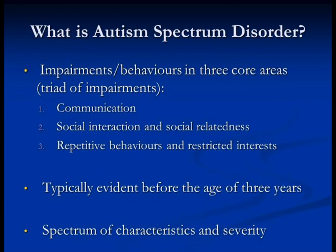So what is autism spectrum disorder? Many of you will know, but for those who are not familiar with the term, autism spectrum disorder is recognised by impairments and difficulties in three specific areas, also known as the triad of impairments: particularly in communication, social interaction and social relatedness, and the presence of repetitive behaviours and restricted interests. Typically these impairments and behaviours are evident before the age of three years. There are some changes coming early next year in terms of the way that autism spectrum disorder is diagnosed, and this three-category system is going to be combined into two categories.